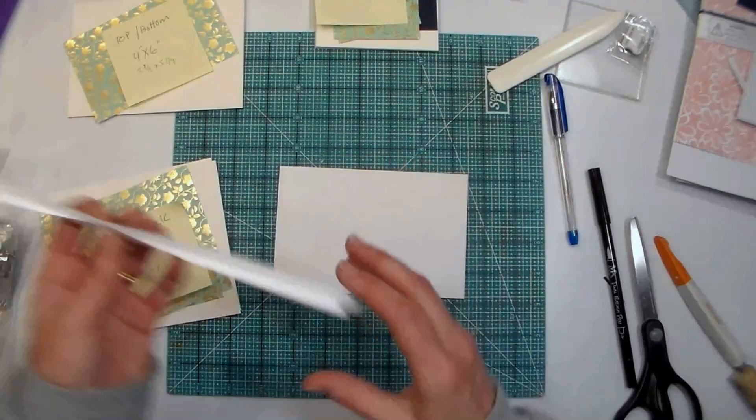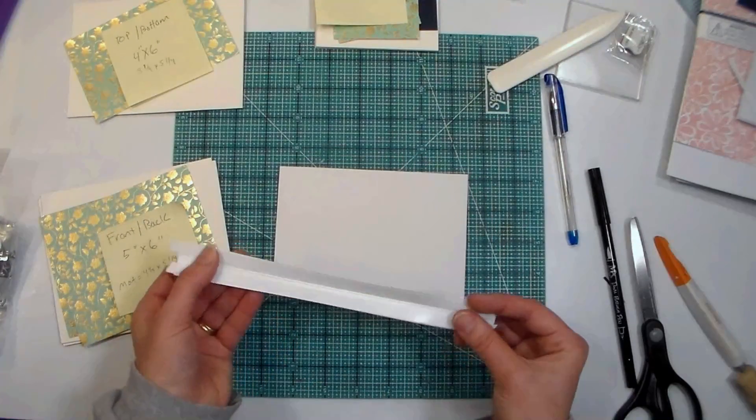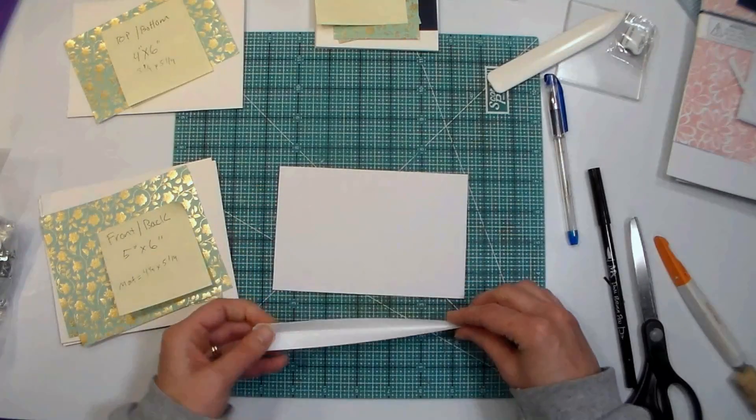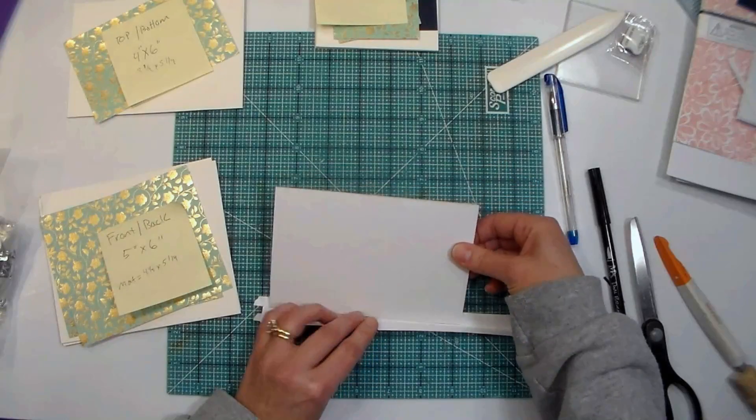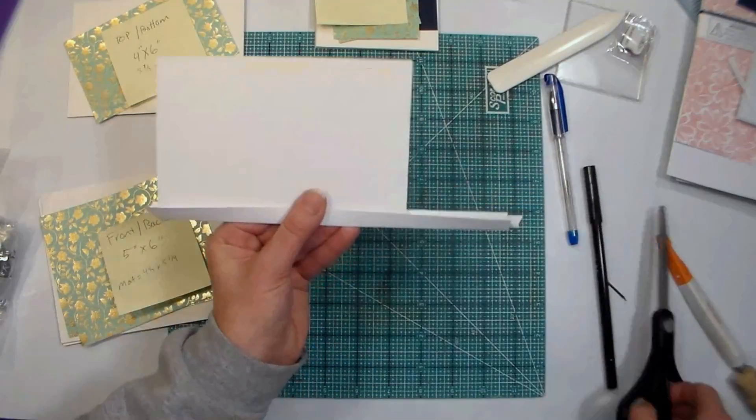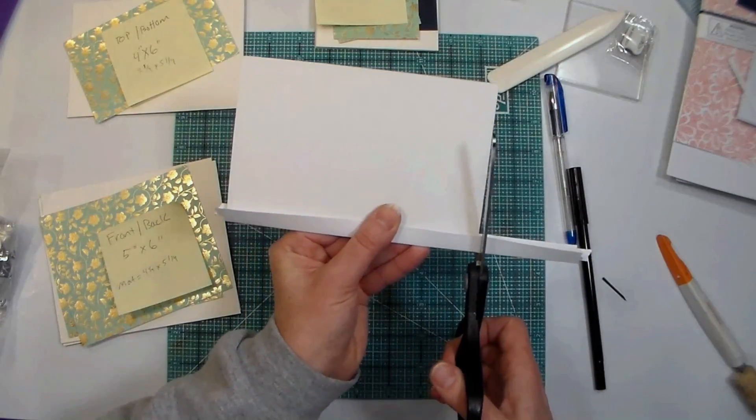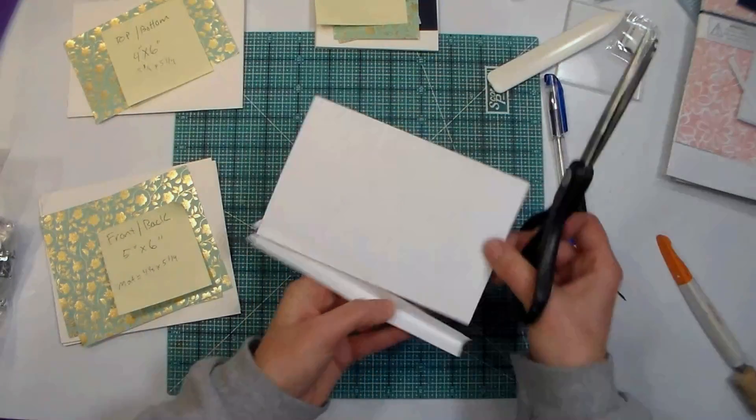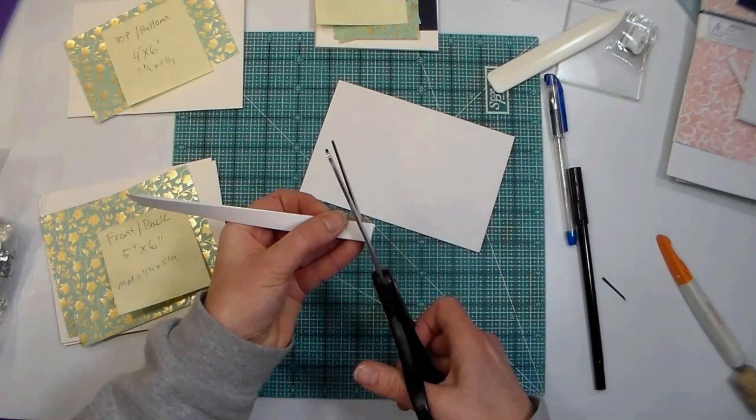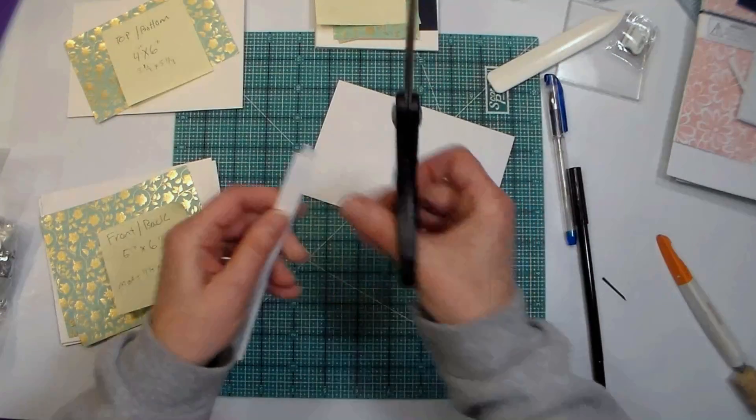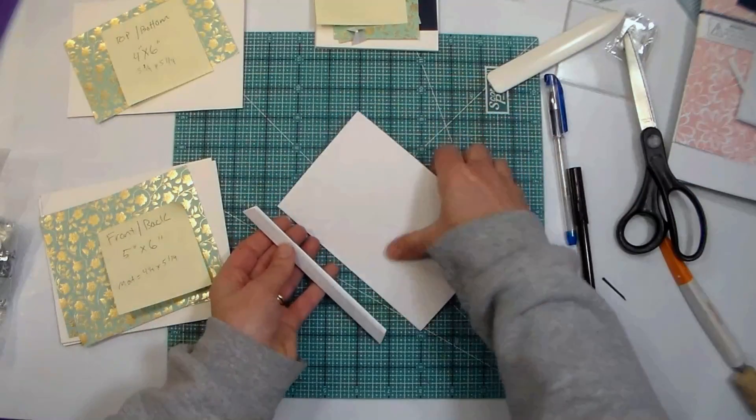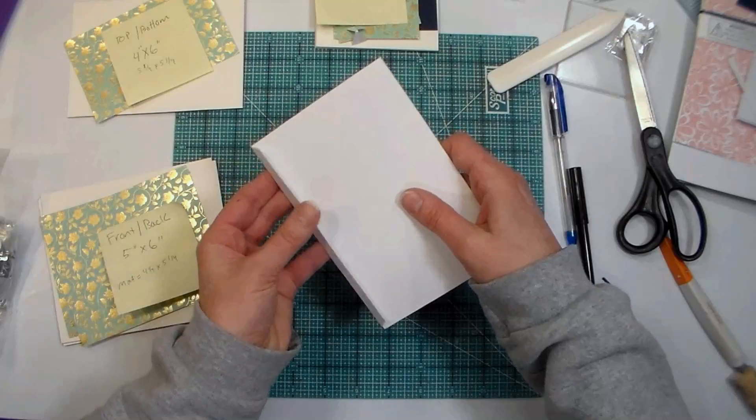So to construct this box, it's really simple. Remember we cut our mat board pieces the exact size we wanted our box to be, so these tabs are going to be the attaching pieces. What you're going to do is trim your construction strips so they are the exact same width as your board. You want to do that because you don't want any overhang, and then you're going to taper them. You're going to cut them in at a little angle on each side so that the strips will kind of miter up against each other.